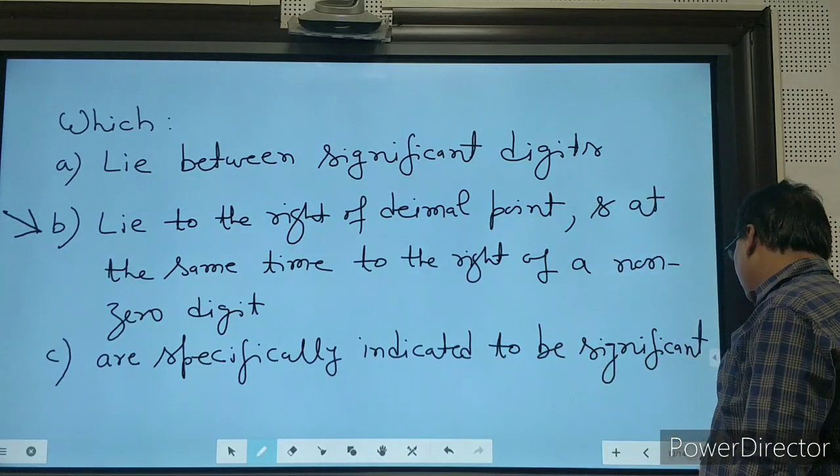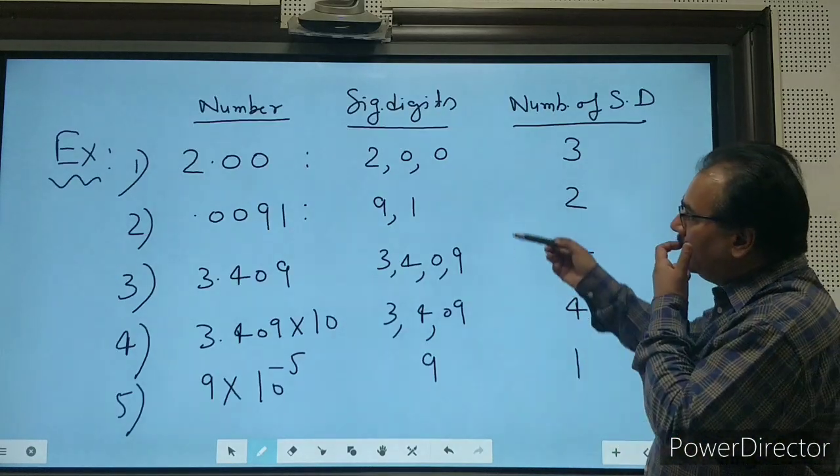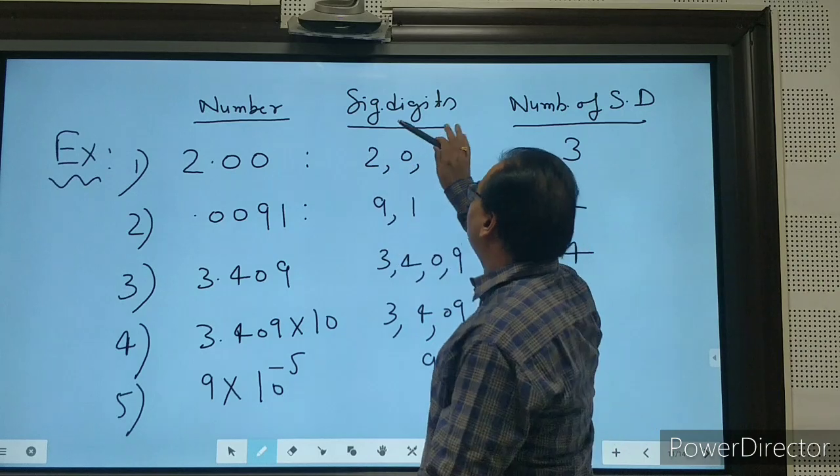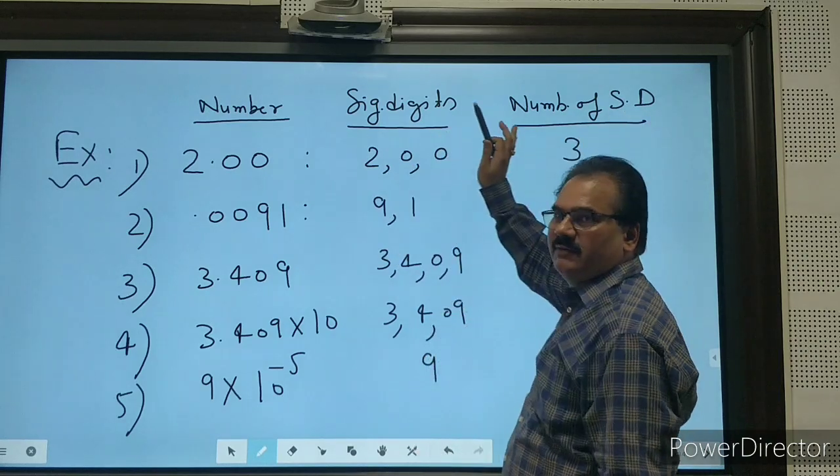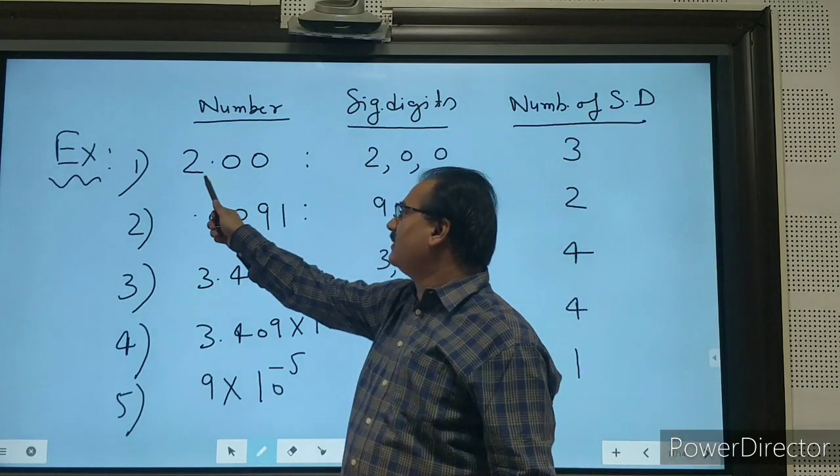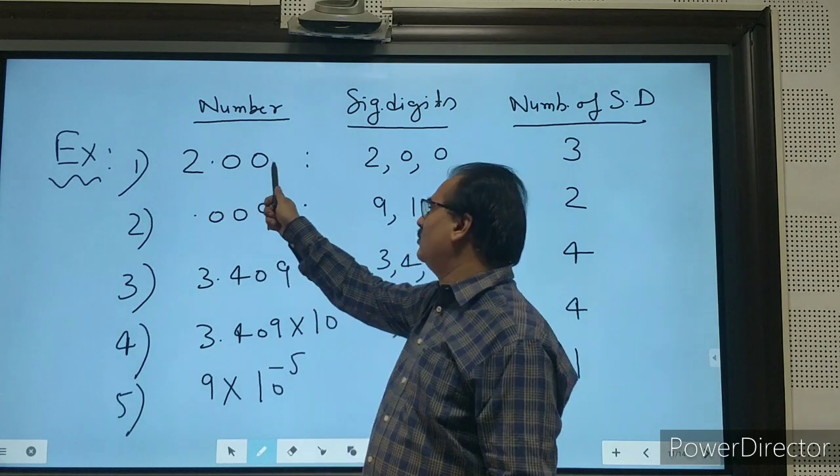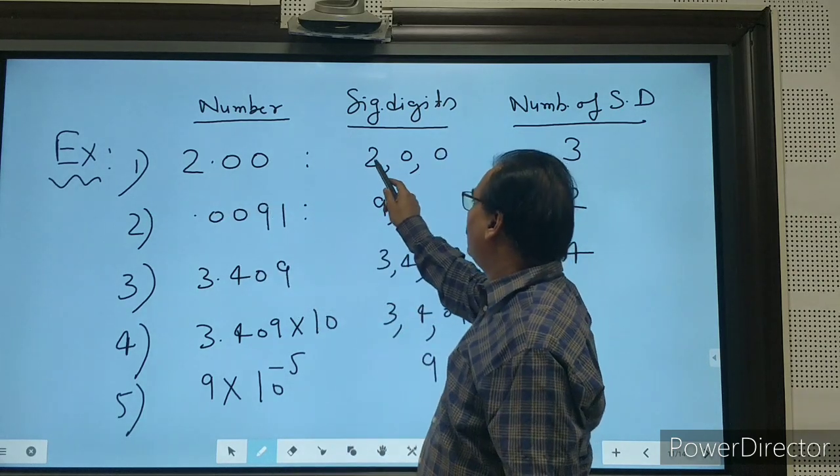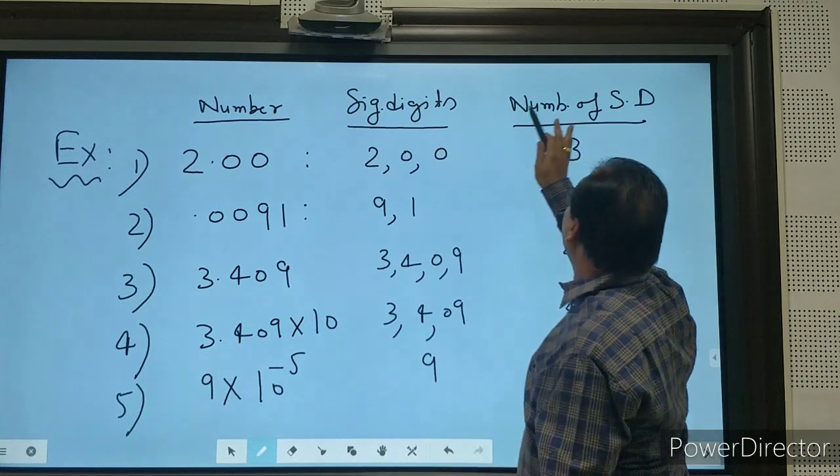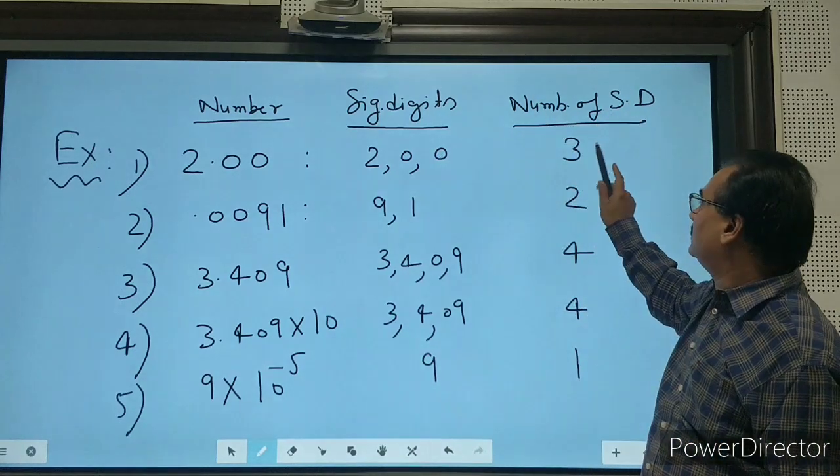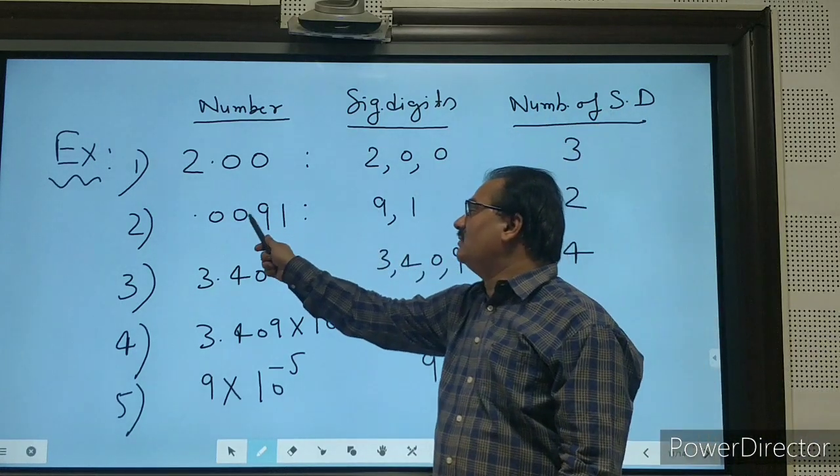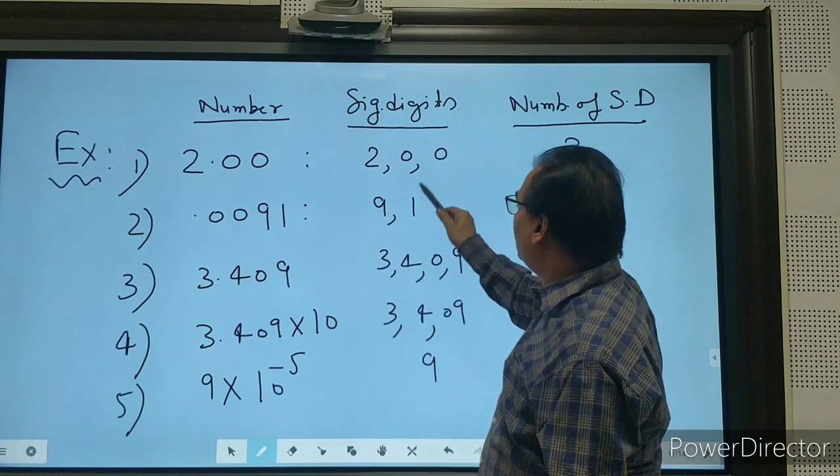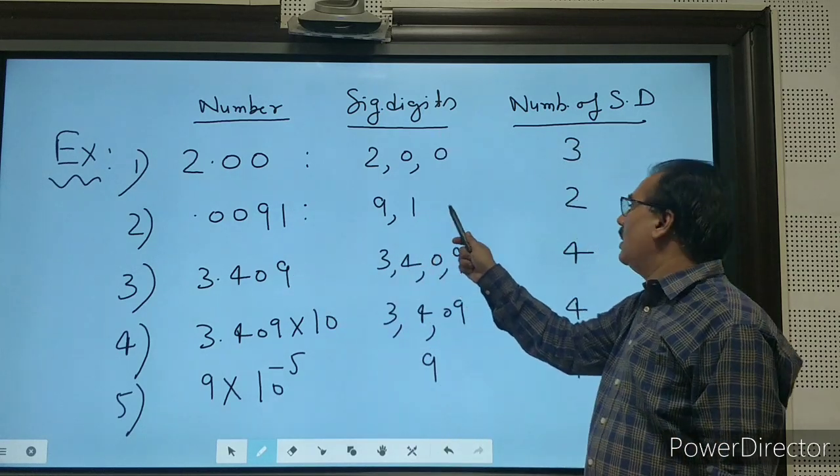Now here I have written the number, significant digits, and number of significant digits. Let us suppose the number is 2.00, so significant digits are all—means two, zero, zero—and number of significant digits is three. But here, 0.0091, significant digits are nine and one, and the number of significant digits are only two.